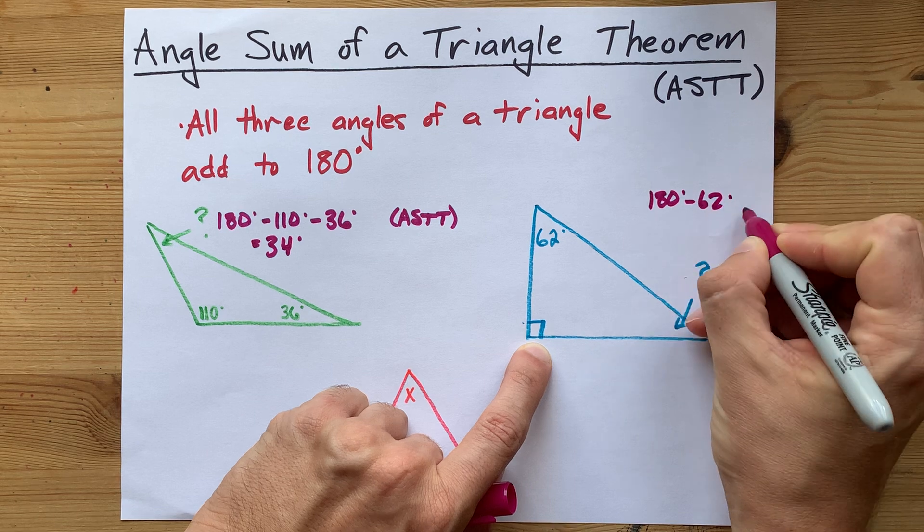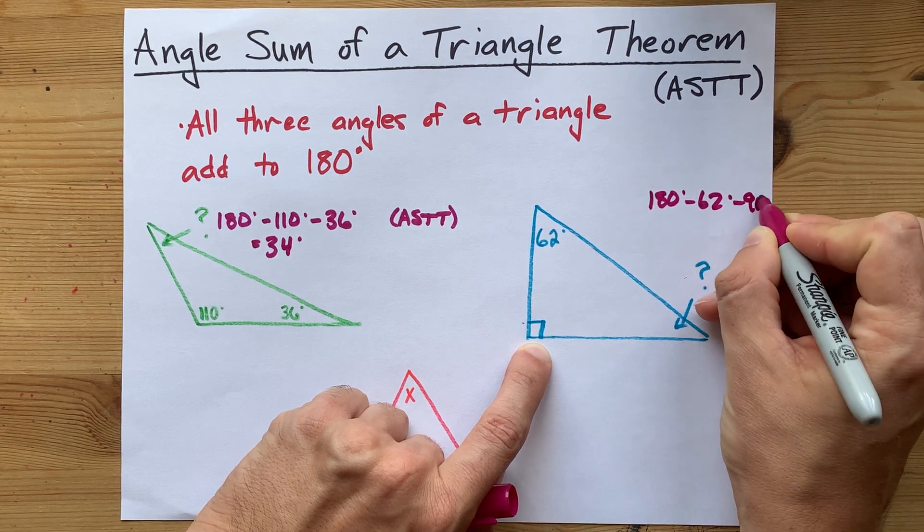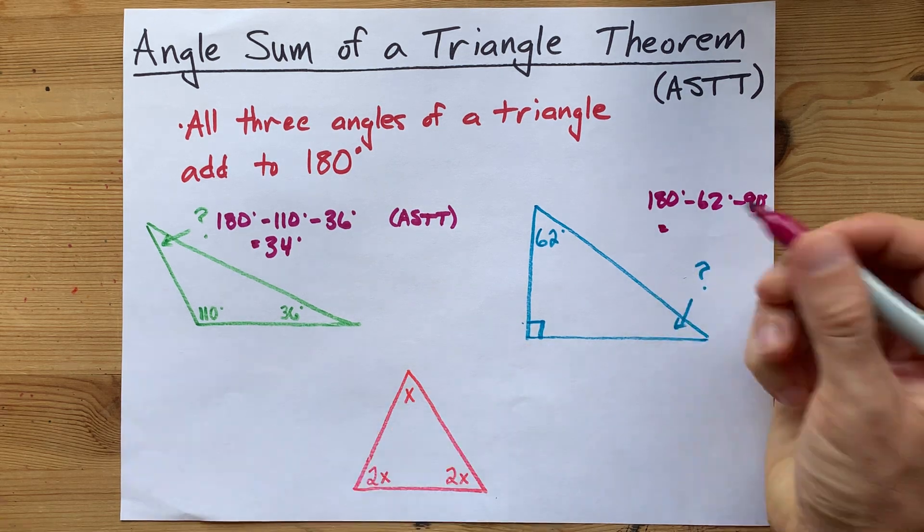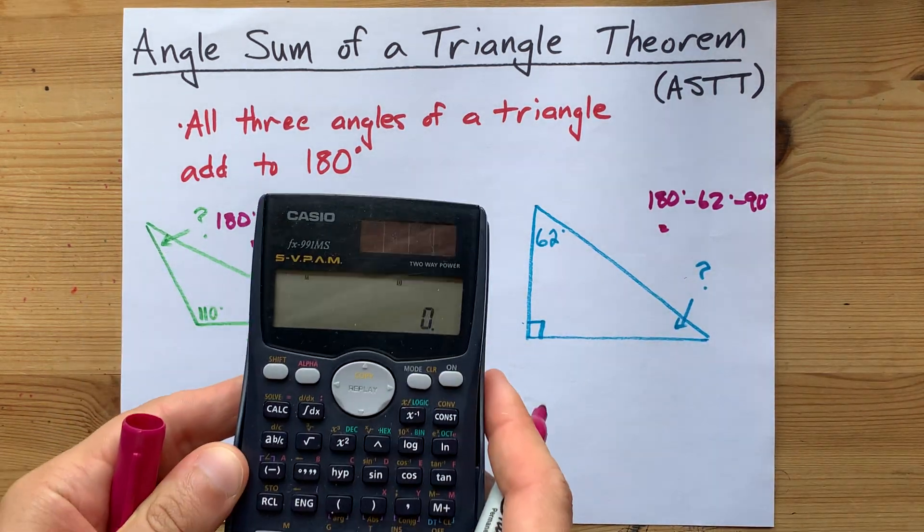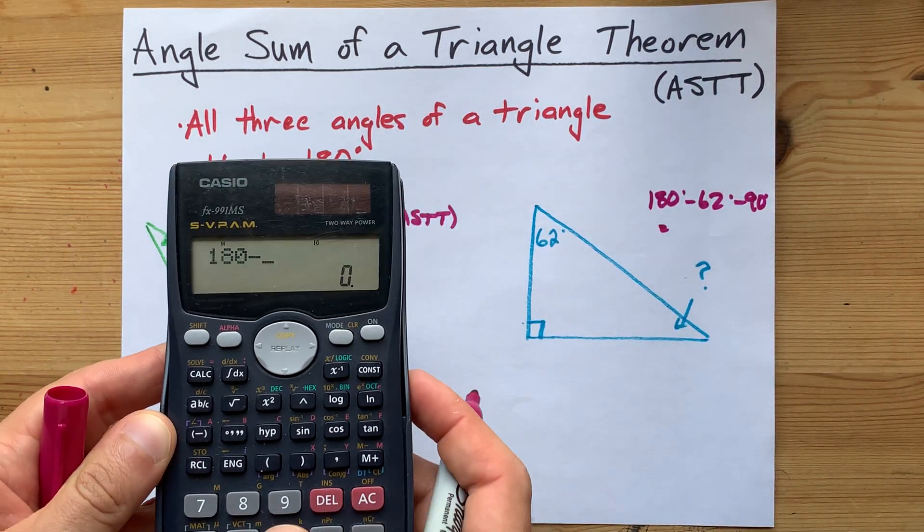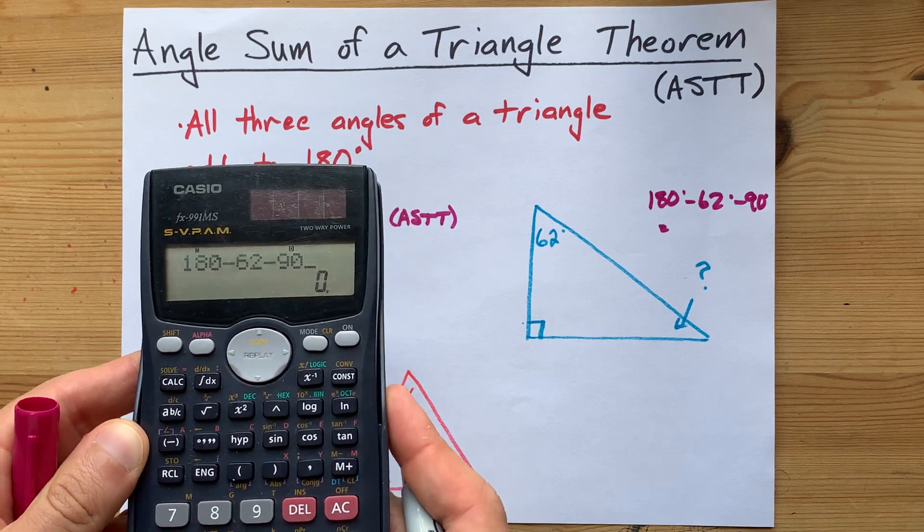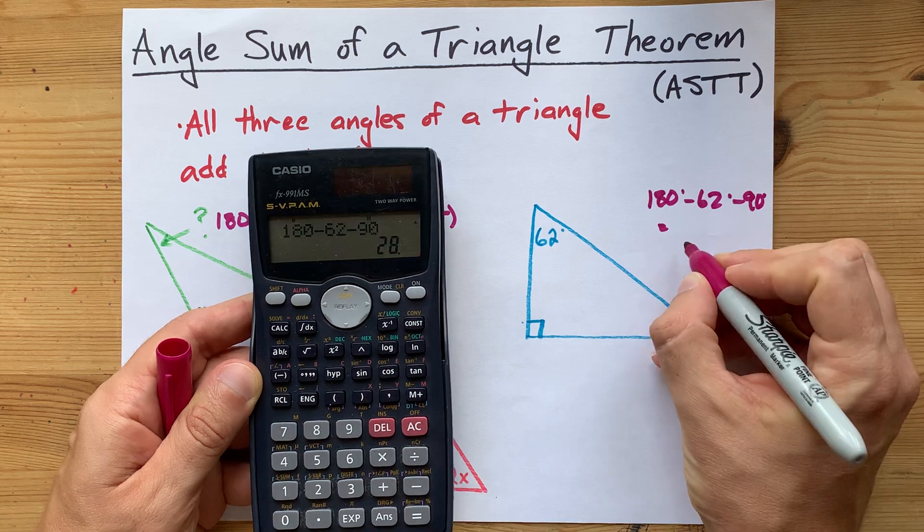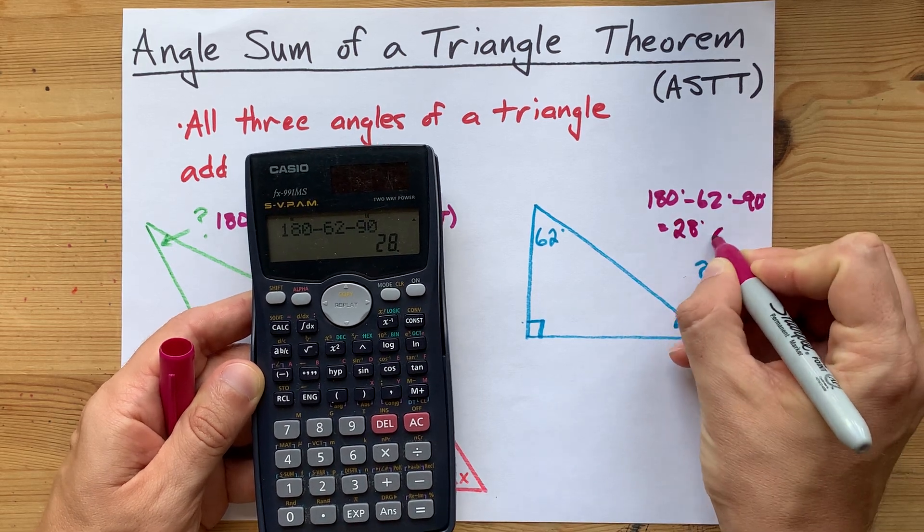you can take away 62 and then the extra 90 that that right angle will always have represented. Don't worry, I'm going to write ASTT like I'm supposed to, to explain how I knew I could take those two angles away from 180. 28 degrees, cite it. ASTT.